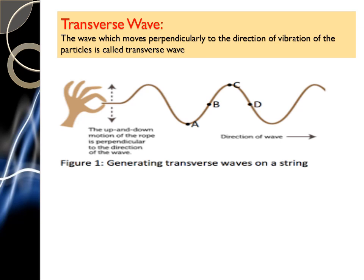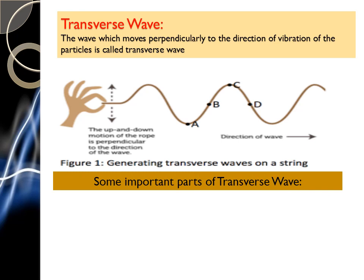Light waves and radio waves are examples of transverse waves. Some important parts of transverse waves include frequency, time period, phase, amplitude, and wavelength. What is frequency? The number of complete vibrations or oscillations or rotations of any object or particle within one second is called the frequency. Its unit is hertz or per second. The related topic, time period, is the required time for a complete vibration, and its unit is second.